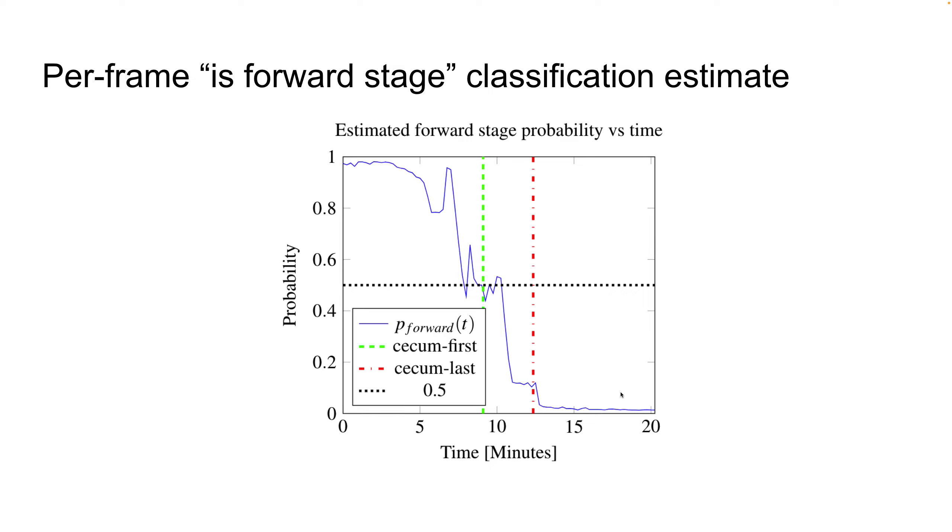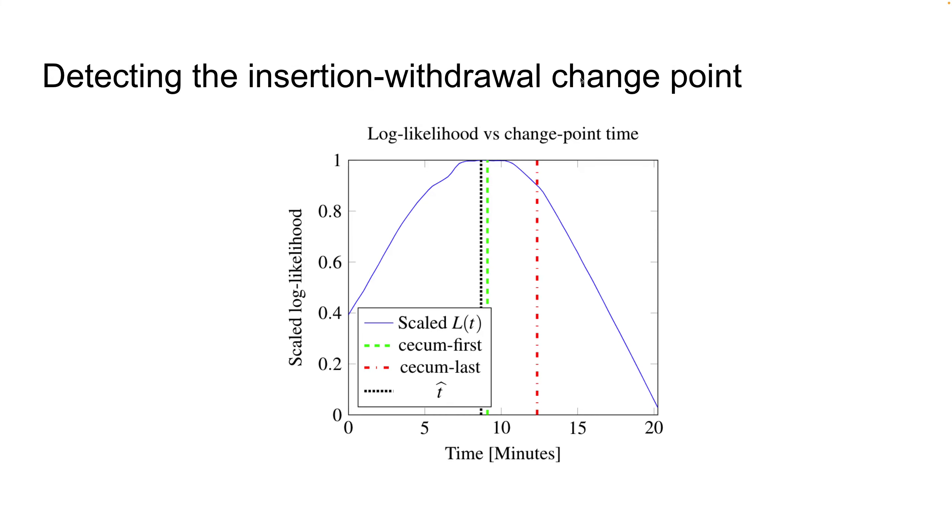And this is, again, everything here is per frame. Here we look at the aggregated log likelihood. The likelihood of the change point changing from forward to backward at time t, so we can see the likelihood increase all the way until we get a few frames before the first cecum. Then this is kind of a long time interval of almost equal likelihood, and then it drops substantially. So the log likelihood estimator is roughly here.